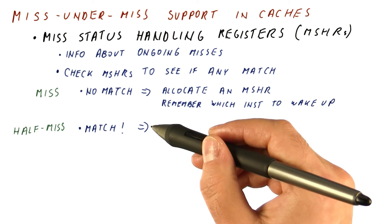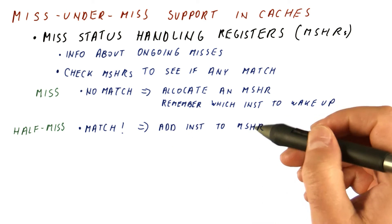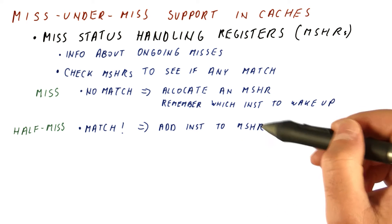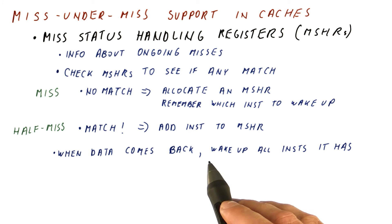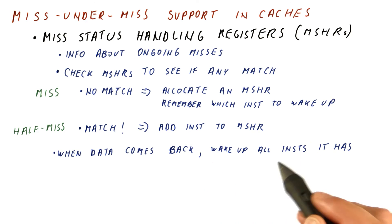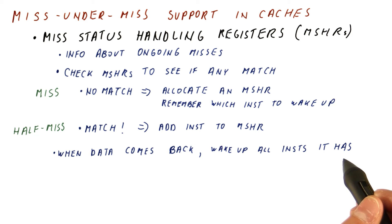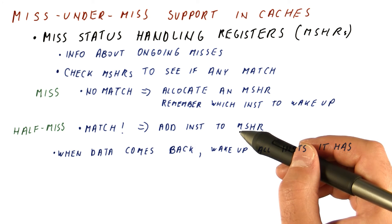Because the request for this block has already been sent to memory, we shouldn't send it again. Instead, we simply add that instruction to the MSHR. When the data finally comes back from memory, we find the MSHR that corresponds to that request and we wake up all the instructions that were added to this MSHR — the first one and all of the subsequent ones that also wanted that data.